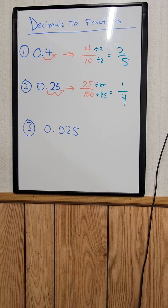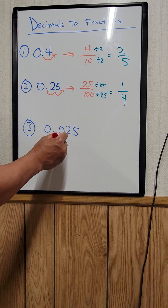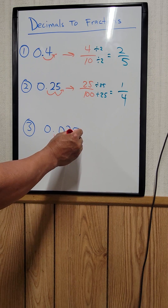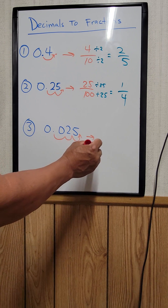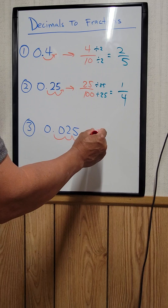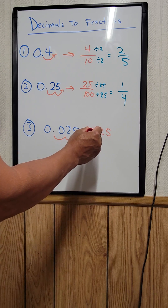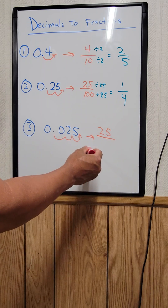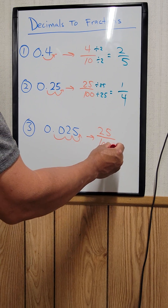How about 0.025? You move the decimal point 1, 2, 3 — three times. So that becomes 25 — you could put a 0 in front of it but you don't have to — so 25 over 1,000.